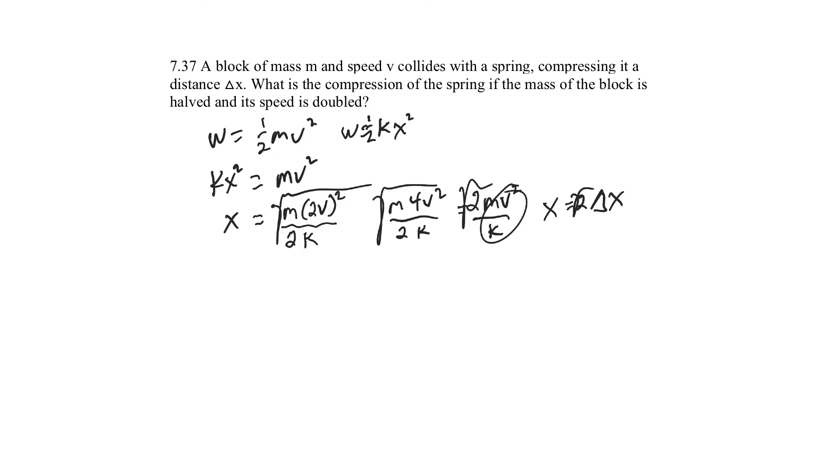So, what is that, 1.4? So, it's going to be a little bit more. So, if you double the speed and half the mass, then it's easier to push, and it's going in faster, then it'll compress it more. The spring will receive the block into it more. So, this will be square root of 2 times the delta x.